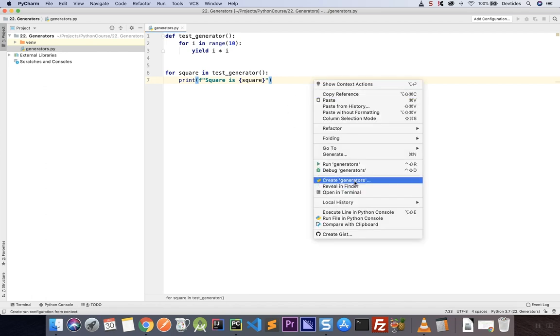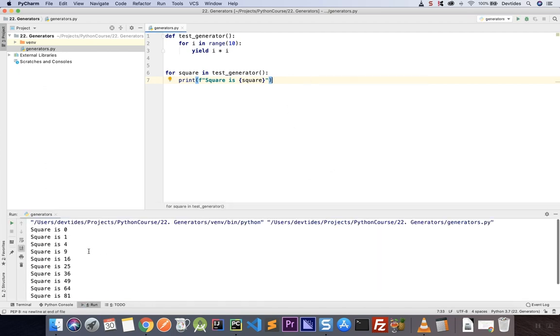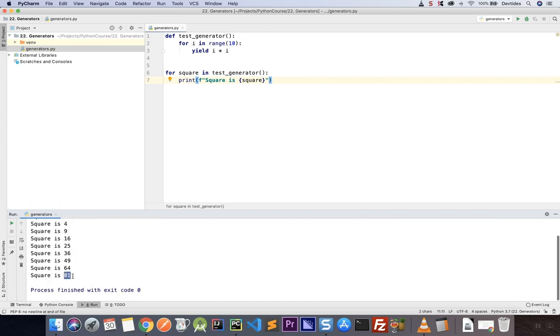So we have our program. Let's go ahead and run it. And we get 0, 1, 4, 9 and so on. So squares from numbers 0 until 9.